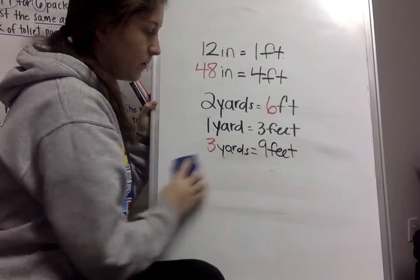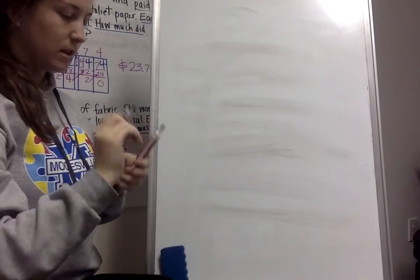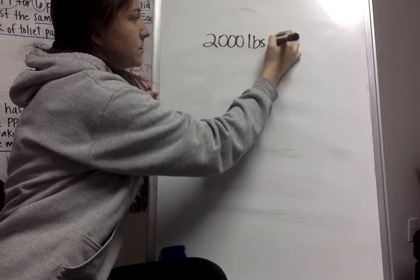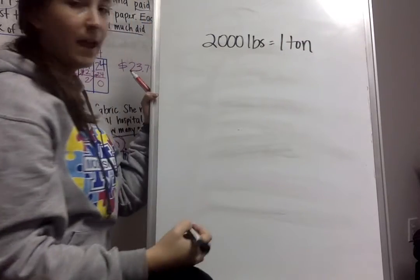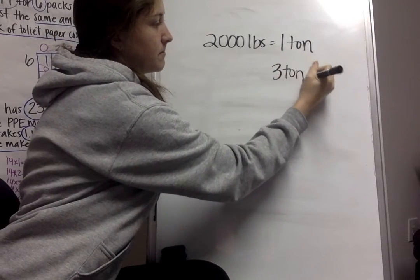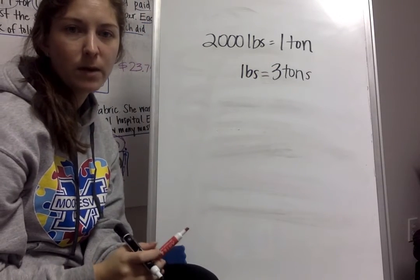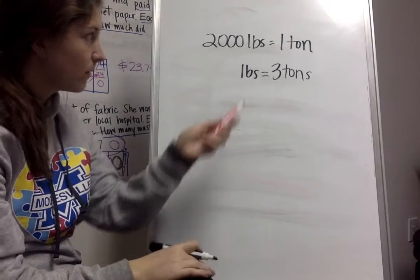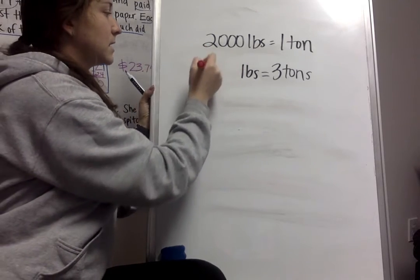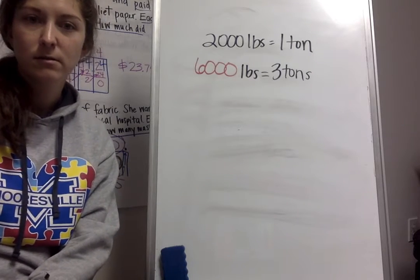Now, we'll look at one more for weight. If I know that 2,000 pounds equals one ton, and I have an elephant that weighs three tons, how many pounds is that elephant going to weigh? What am I going to have to do? So I'm going to have to multiply 2,000 times three. And I know that 2,000 times three is 6,000. So that elephant would weigh 6,000 pounds.